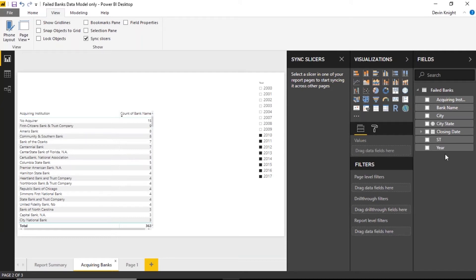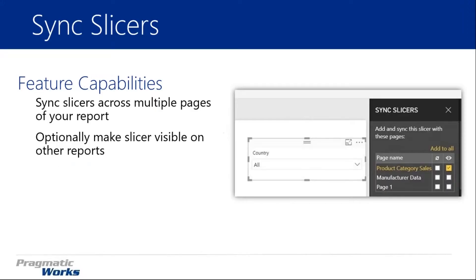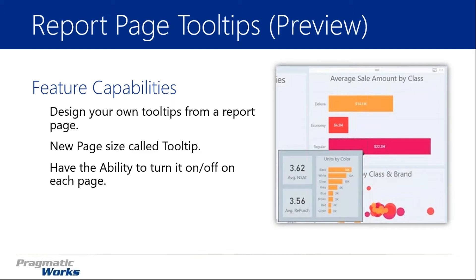That's the Sync Slicer feature — it allows you to sync slicers across multiple report pages. Now let's look at probably the coolest new feature in my opinion. This one came out just a couple of weeks ago and is still in preview, so it's not officially released yet. The idea is that you can actually change and modify the tooltips in your reports to pop up other report pages. The report page that pops up needs to be within the same Power BI solution you're working with.